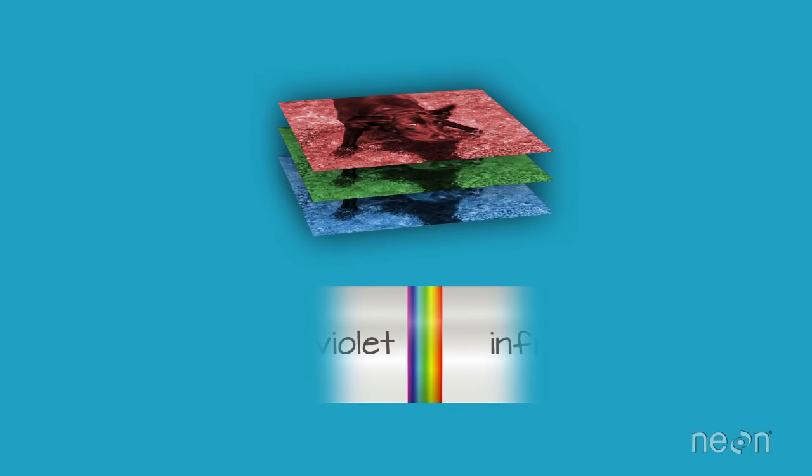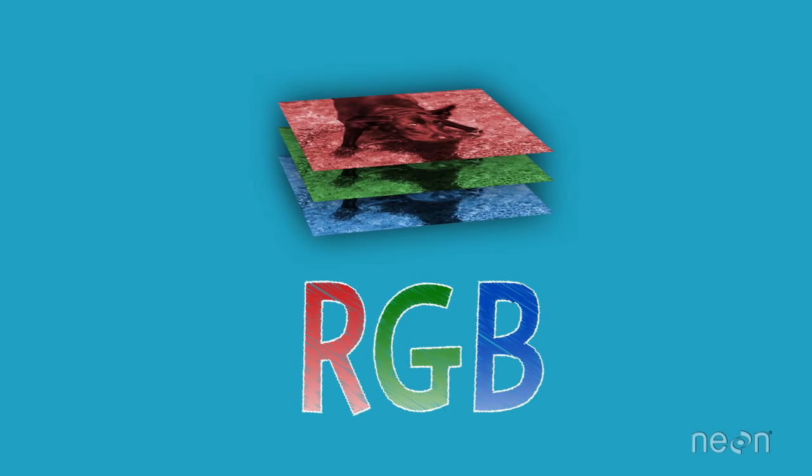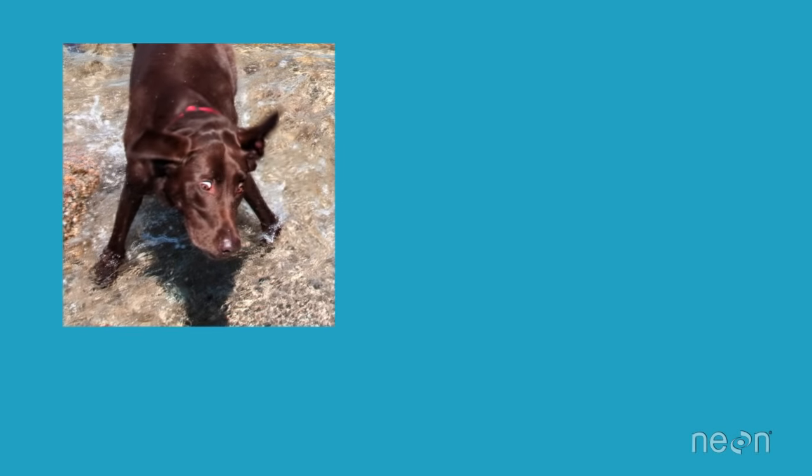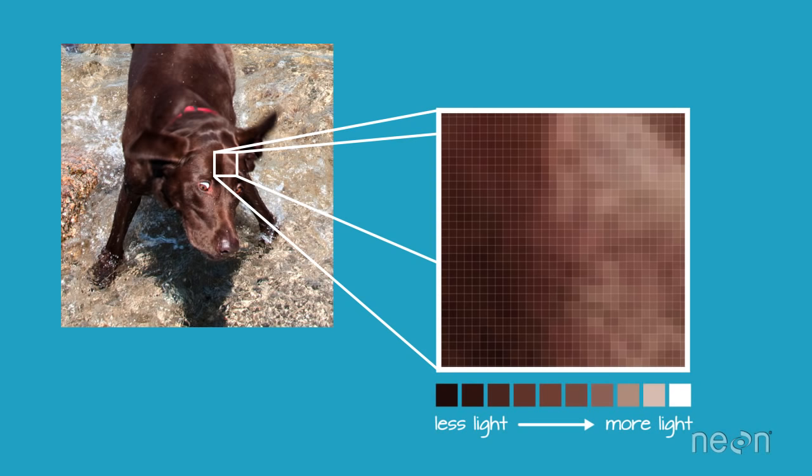The camera creates what's called an RGB image, which is composed of millions of pixels. Each pixel in the image contains a value representing the amount of red, green, and blue light reflected.